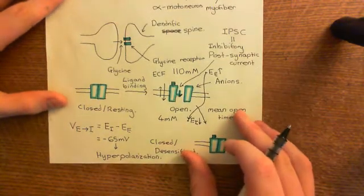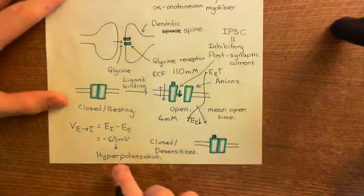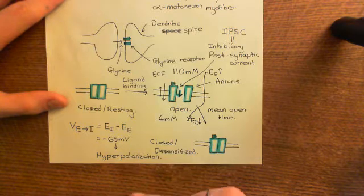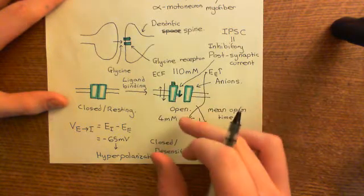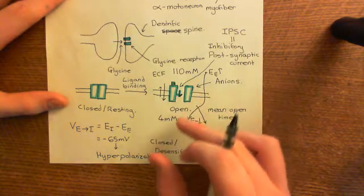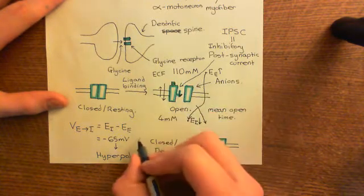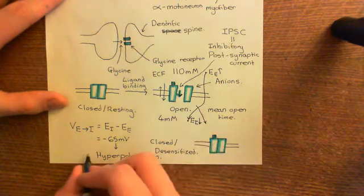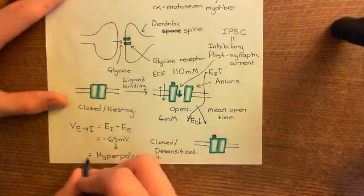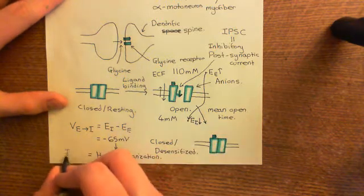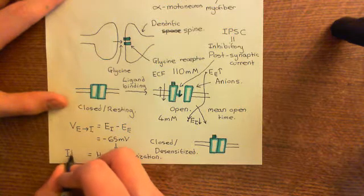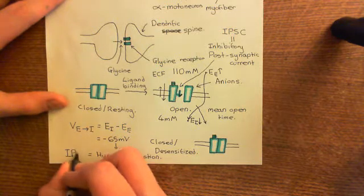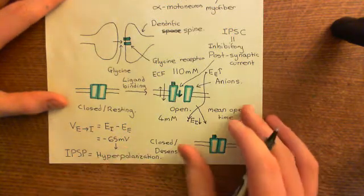The IPSC then leads to hyperpolarization, and that hyperpolarization of the electrical potential difference across the membrane is then what's known as an inhibitory postsynaptic potential, often denoted as IPSP.